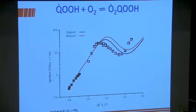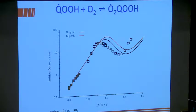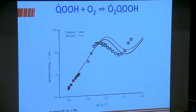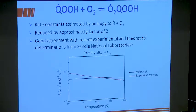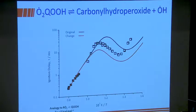Now we add rate constants for the hydroperoxy alkyl radical — consider it like an R radical, an alkyl radical that adds to molecular oxygen to give O2QOOH. We take rate constants similar to those for alkyl radical plus O2, but that actually decreases the reactivity, because the ones from Miyoshi are slower than the ones we were using before.